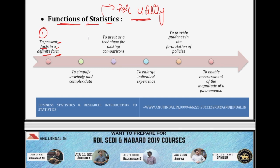Governments also rely on statistics — they only know a slowdown has occurred when they see that growth rates have fallen, GDP is declining, or consumption is not happening in the country. For example, looking at India's auto sector recession — it became clear there was a recession because the number of cars being sold in the market had reduced. So the first function is to present facts in a definite form. After that, to use statistics as a technique for making comparisons, which we discussed earlier as a major function.